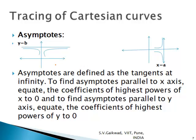The next property is asymptotes. As x tends to a, y tends to infinity, or as y tends to b, x tends to infinity — these lines are asymptotes parallel to the axes. They are also defined as tangents at infinity. To find asymptotes parallel to the x-axis, equate the coefficient of the highest power of x to zero. To find asymptotes parallel to the y-axis, equate the coefficient of the highest power of y to zero.